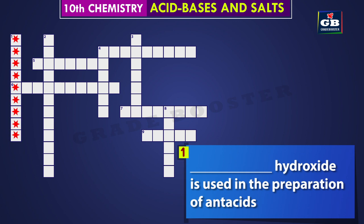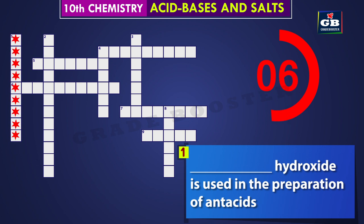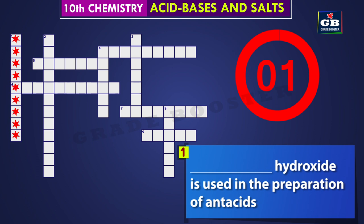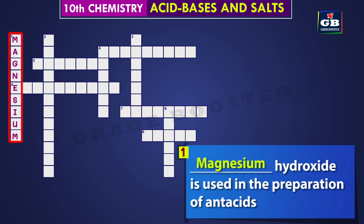Dash hydroxide is used in the preparation of antacids. Did you get it? The answer is magnesium hydroxide. Magnesium hydroxide is used in the preparation of antacids. Antacids are used to treat acidity.